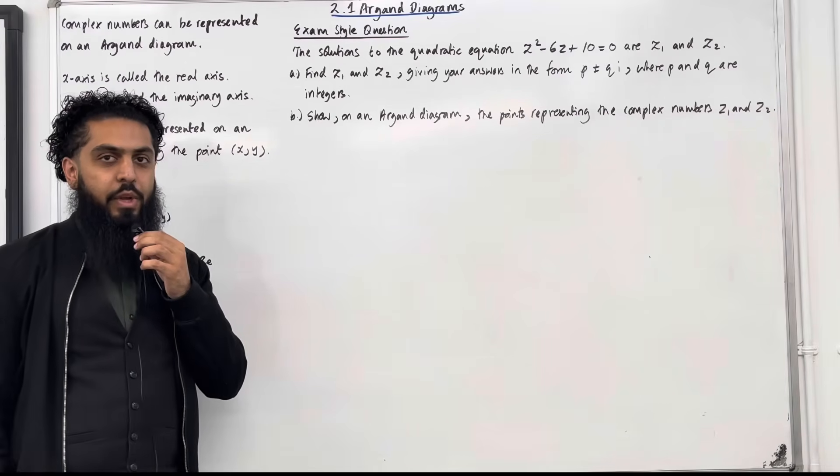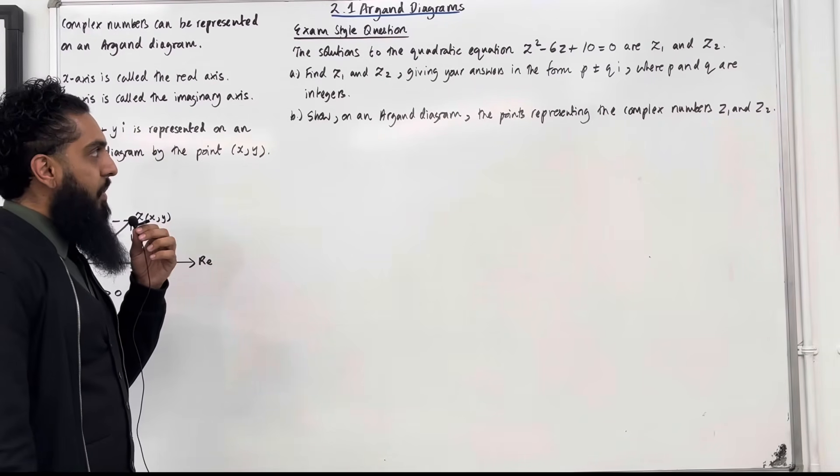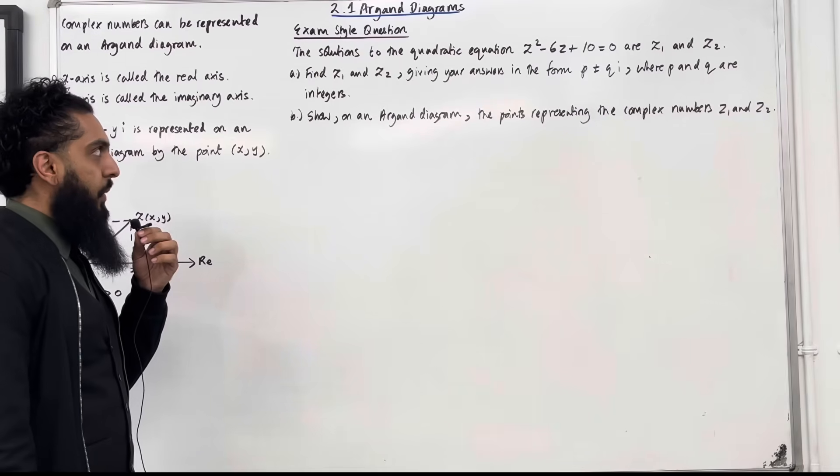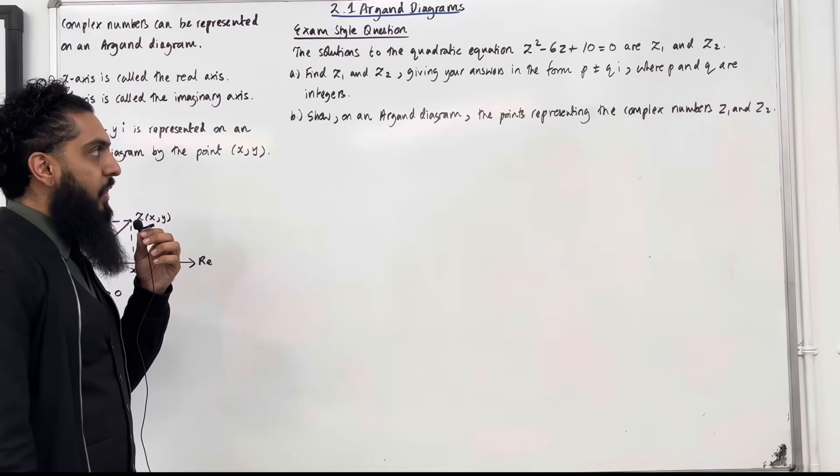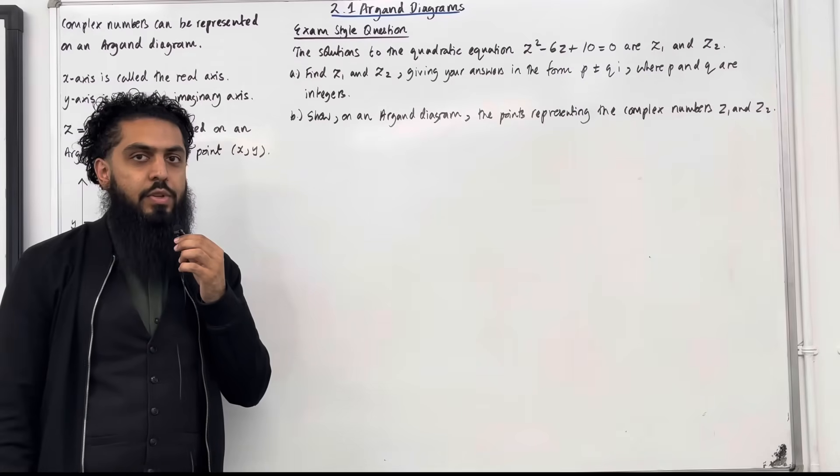Here is an exam style question. The solutions to the quadratic equation z² - 6z + 10 = 0 are z₁ and z₂. Part A: find z₁ and z₂ giving your answers in the form p ± qi where p and q are integers. Let's have a look at the solution to part A.